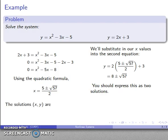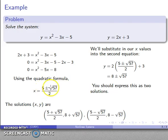So the solutions x, y... Well, if I use 5 plus root 57 over 2 as my x value, my y value is 8 plus root 57. So there's my first solution. If I use 5 minus square root of 57 over 2, my y value is going to be 8 minus square root of 57. And so there's my second solution. And I have my two solutions to this system of equations.